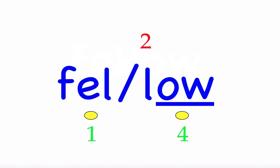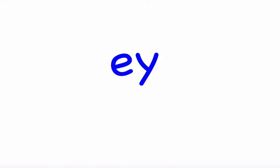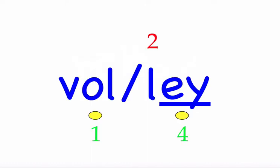The next word is 'volley.' That volleyball team is the best. First syllable 'vol' — three sounds, V-O-L. Second syllable 'ley' — two sounds, L-E-Y. Mark the word. Volley.